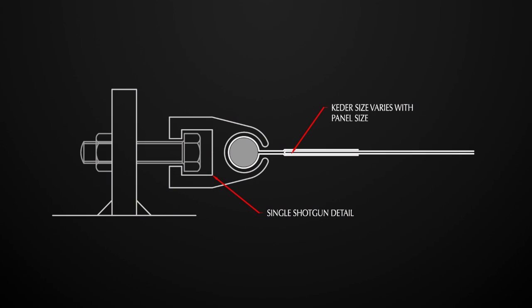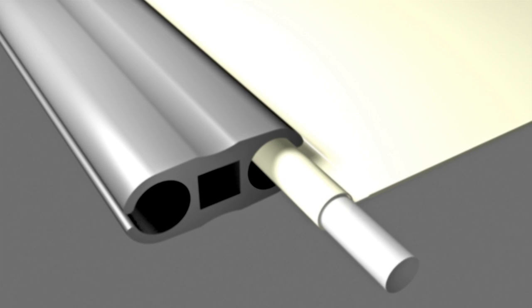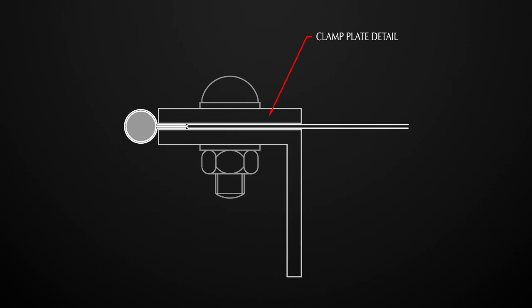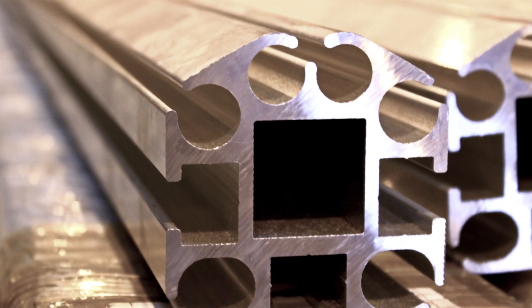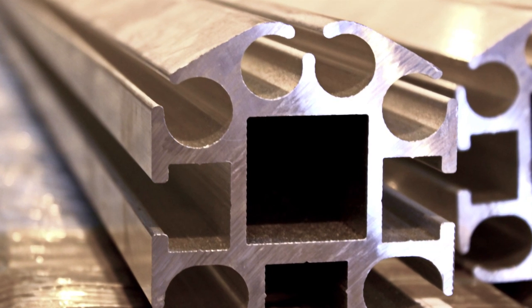Fabric under tension does not naturally form a straight line. So when a straight edge is required, the membrane is manufactured with a CADA or beaded edge, formed by sealing a flexible rod in a small pocket. This can then be trapped behind an aluminium clamp plate, bolted directly onto the structural steelwork or slid into an aluminium luff track extrusion.